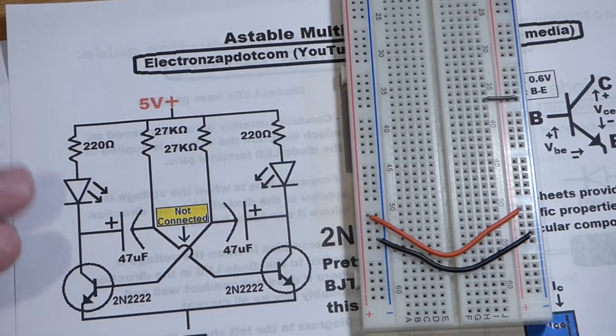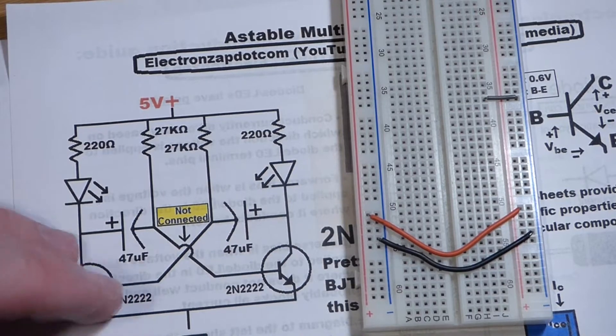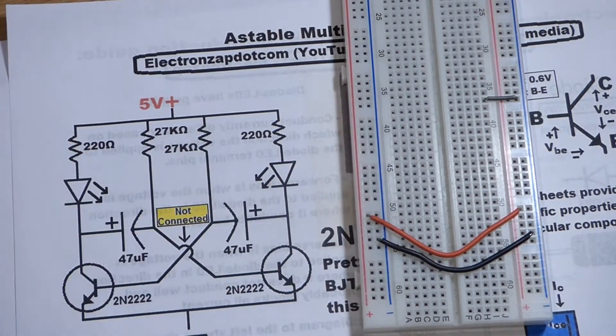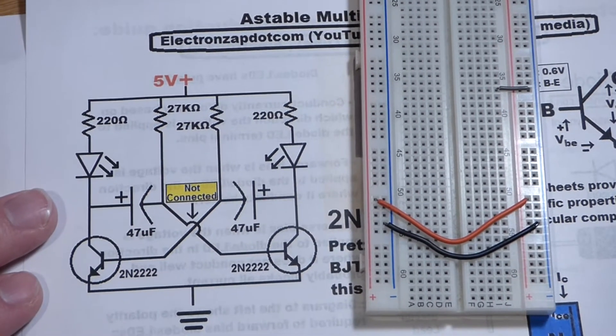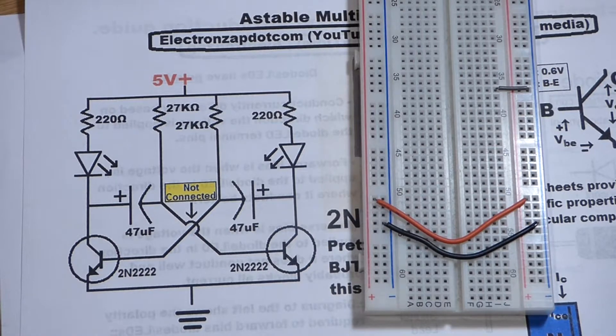I'm going to be building an astable multivibrator circuit, but it's not going to be exactly this one. There's going to be quite a few differences. I'm going to build it on the board and this is a response to a comment that I got. I'm going to use the component values that were presented in that comment.